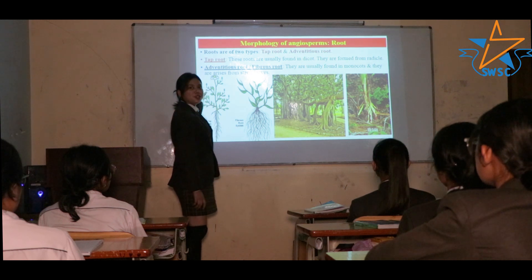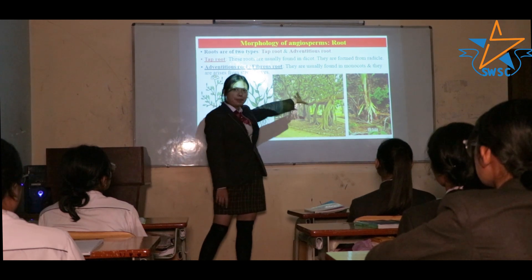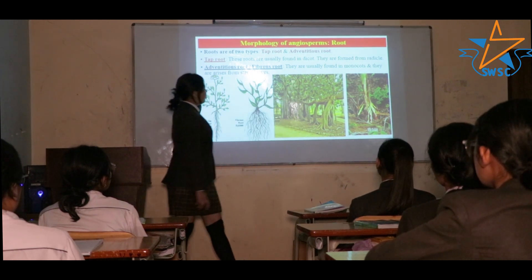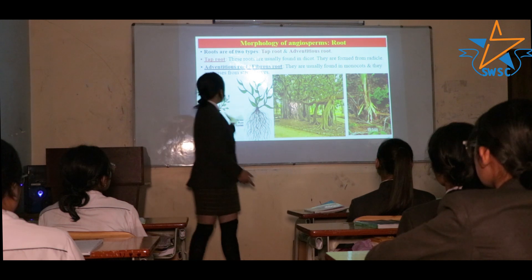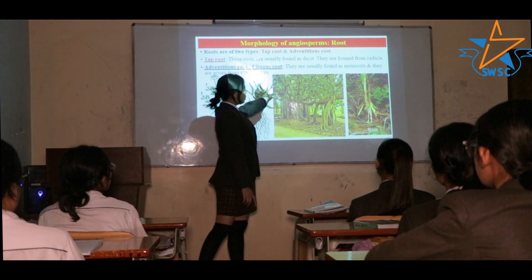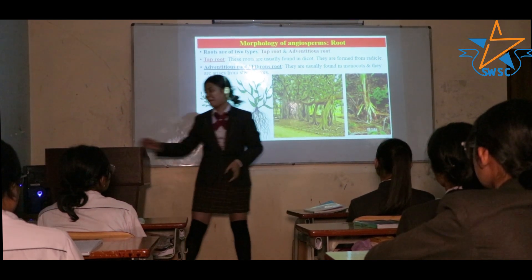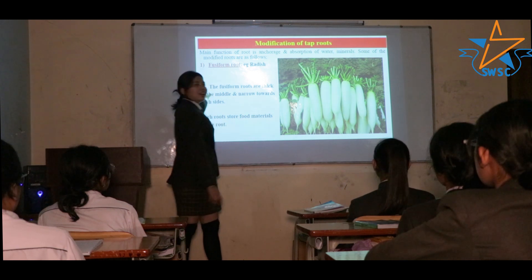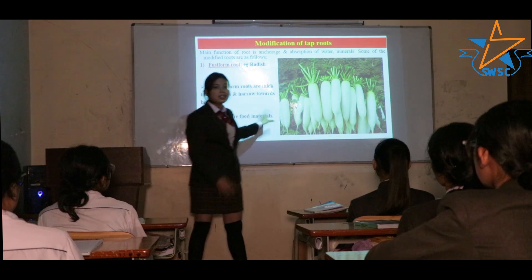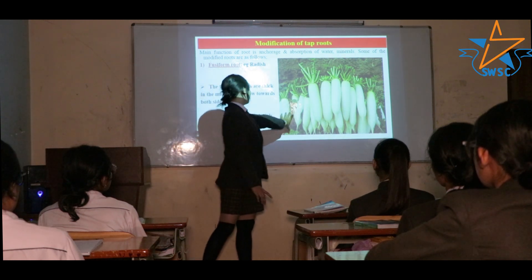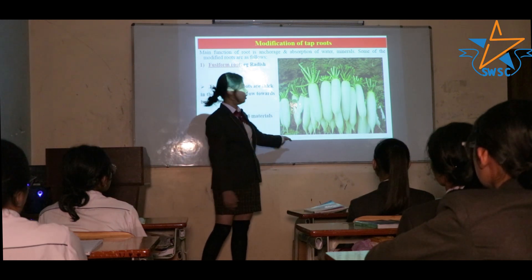Moving on to the morphology of angiosperms — roots. Roots are of two types: taproot and adventitious roots. Taproots are usually found in dicots and are formed from the radicle. Adventitious or fibrous root systems are usually found in monocots and arise from the stem and leaves. Fusiform roots — for example, radish — are thick in the middle part and store food materials.